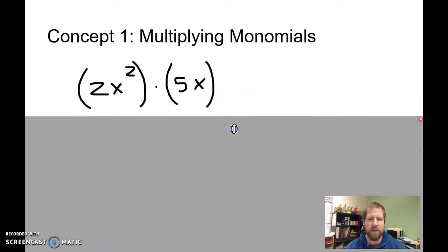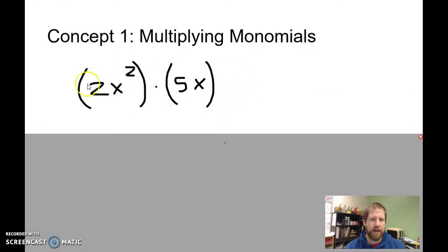So concept one is multiplying monomials. I have two monomials, and I'm multiplying them. One thing we need to remember is that between this 2 and this x squared, this is multiplication. Between this 5 and this x, this is multiplication. So we can move things all around as much as we want, and it's still going to remain the same.